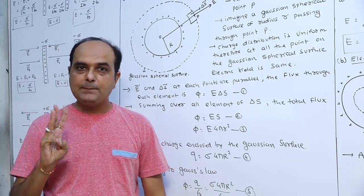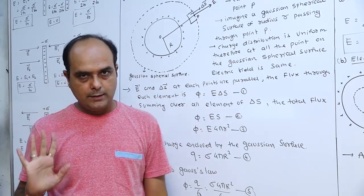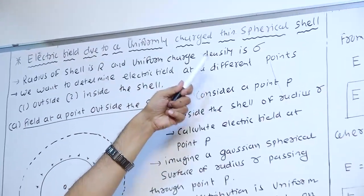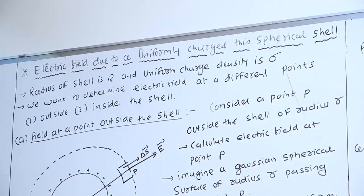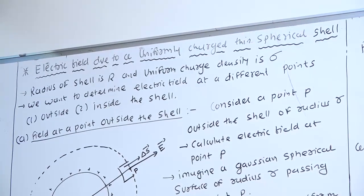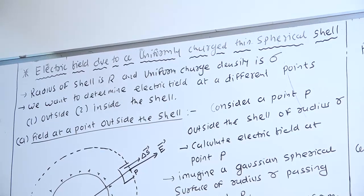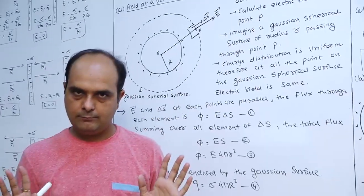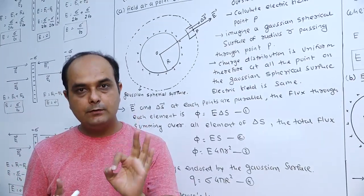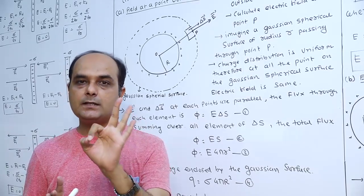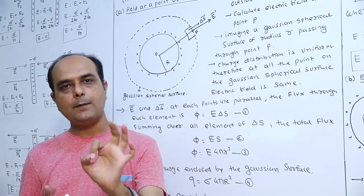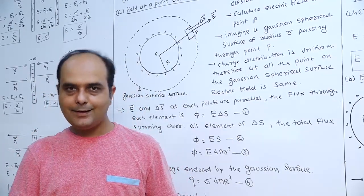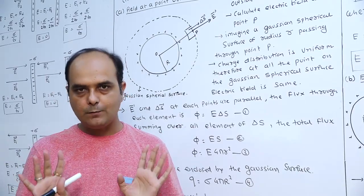The third application of the Gauss theorem is: calculate the electric field intensity due to a uniformly charged thin spherical shell. A spherical shell is a hollow sphere in which we use the surface charge density sigma, and the radius of the sphere is capital R. We want to calculate the electric intensity outside the shell and inside the shell.